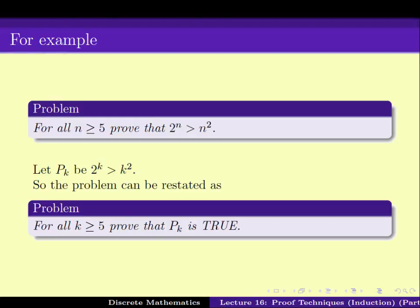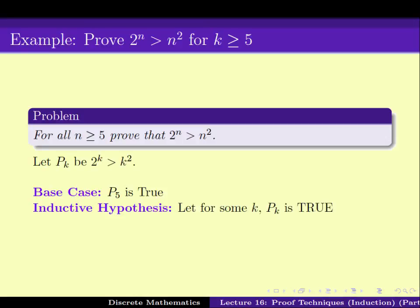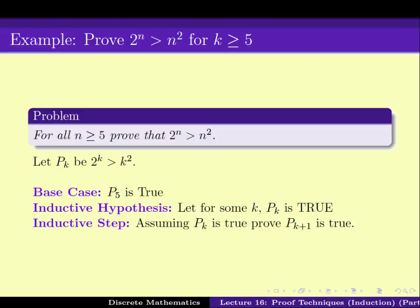What do we have to prove? First, the base case — namely P5 is true. Then the induction hypothesis, which says that for some k ≥ 5, Pk is true. And then assuming Pk is true, prove that Pk+1 is true. Once you get it in this form, it should be a standard straightforward proof. Let's plug in the statements of Pk, Pk+1, and P5: the base case is to prove 2^5 > 5²; the induction hypothesis is that for some k, 2^k > k²; and the inductive step is: assuming 2^k > k², prove that 2^(k+1) > (k+1)².